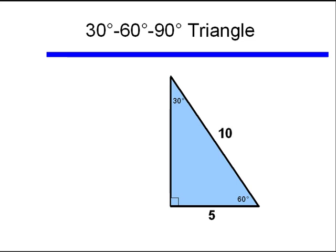So the hypotenuse used to be length 2, and now 2 times 5, it is now length 10. Similarly, the other leg was square root of 3, and it is now 5 square root of 3.